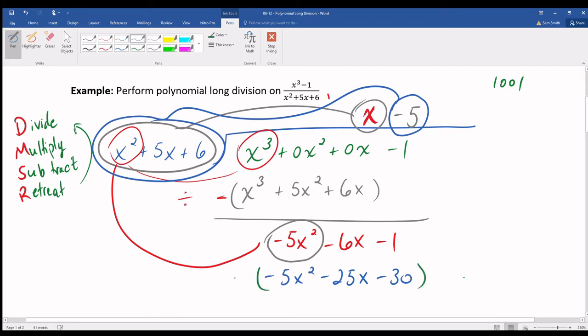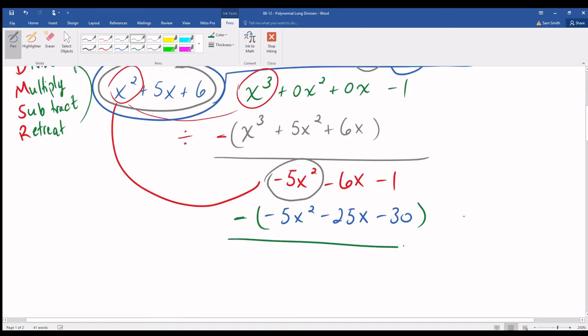Having multiplied, now let's subtract. Negative 5x squared take away negative 5x squared, result 0. They cancel each other out. Negative 6x take away negative 25x, result 19x. Negative 1 take away negative 30, result 29.